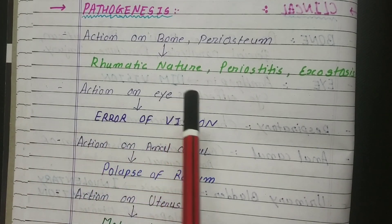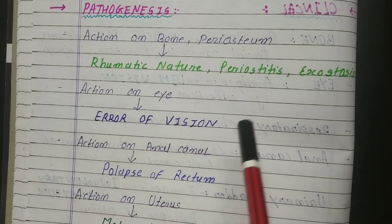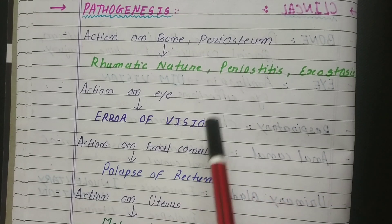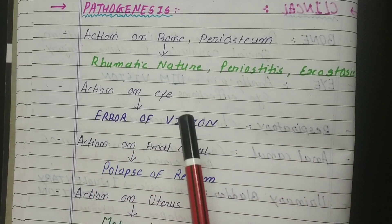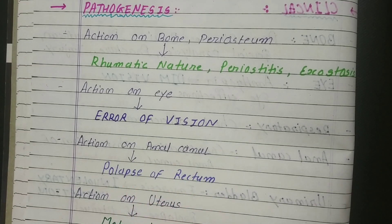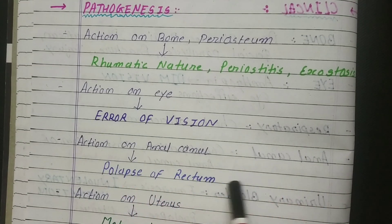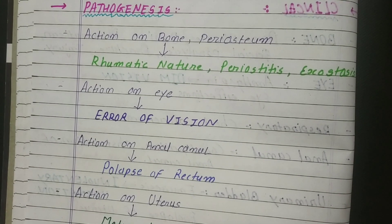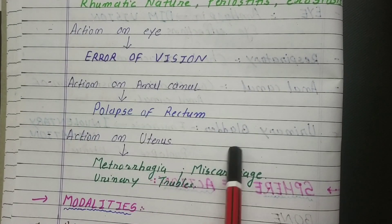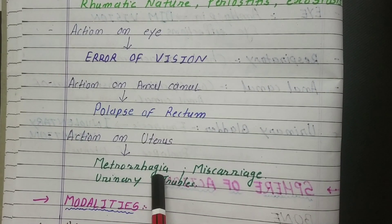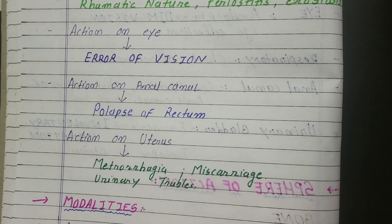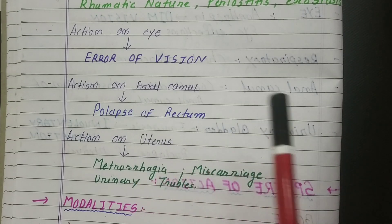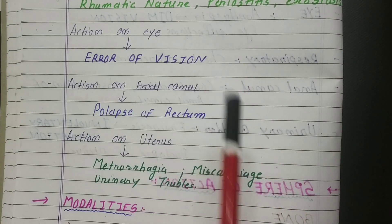Now we will see the pathogenesis. First: it acts on bone and periosteum, so it causes rheumatic nature — it has rheumatic nature and causes rheumatism. Then periosteitis — inflammation occurs in the periosteum — and exostosis. Action on eye: it acts on the eye so it causes errors of vision. We will see in particulars how we can give it in specific diseases. Action on anal canal: it causes prolapse of rectum. Action on uterus: it causes metrorrhagia, miscarriage, and urinary problems — as we will see which urinary problems arise from its action on the urinary bladder.